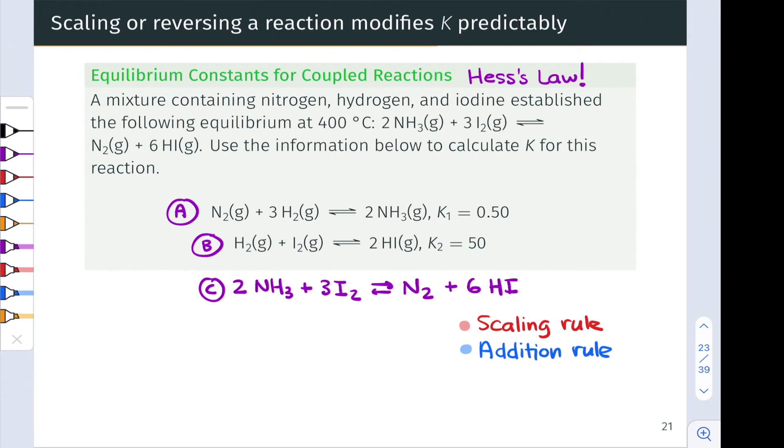In this practice problem, we're told that a mixture containing nitrogen, hydrogen, and iodine has the following equilibrium at 400 degrees Celsius. And the chemical equation is given here. I've rewritten it down below as reaction C. We have information about these related reactions, A and B, and their equilibrium constants, K1 and K2.